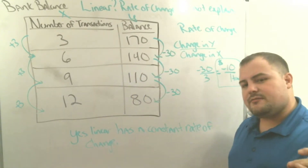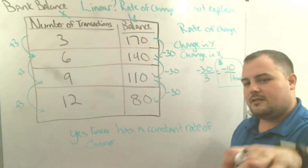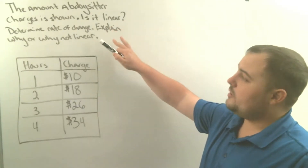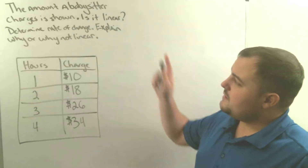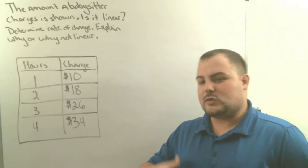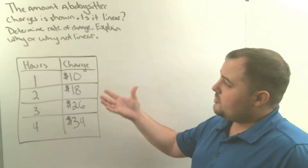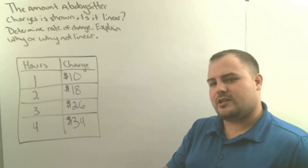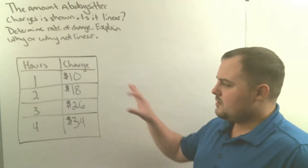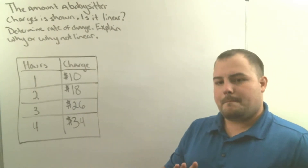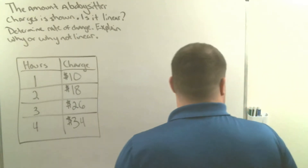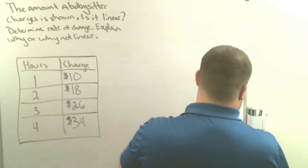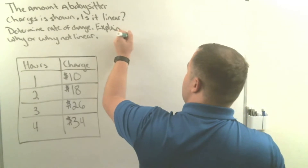As long as something has a constant rate of change, it's going to make a straight line when we graph it. In example two, we're going to look at a babysitter charges model and determine if it's linear. Based on the table, we ask: if we graphed this, would it make a straight line? If it is linear, determine the rate of change and explain why or why not. Try this problem on your own first. The first thing we do is find the change in y and the change in x — we're looking for a rate of change.